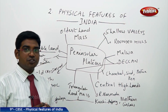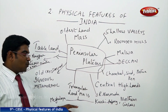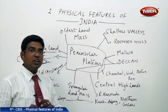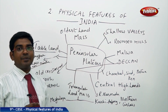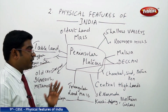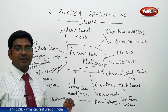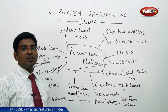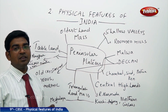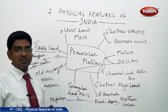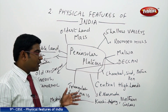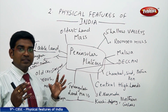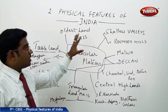Moving on to the Deccan Plateau region — it is a triangular landmass consisting of the Meghalaya hills, the Karbi-Anglong hills, and the Northern Sarkar hills. These hills together comprise the Deccan Plateau region, bounded by the Western Ghats on the western side and the Eastern Ghats on the eastern side. When we look at the shape of India towards the southern side, we find a similar inverted triangular shape. The Deccan Plateau also contains many old rocks, which is why the entire Peninsular Plateau is known as the oldest landmass.